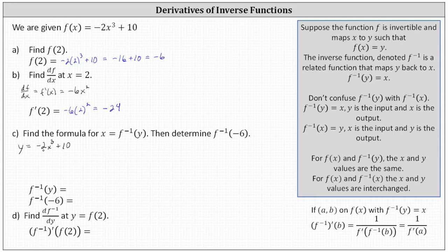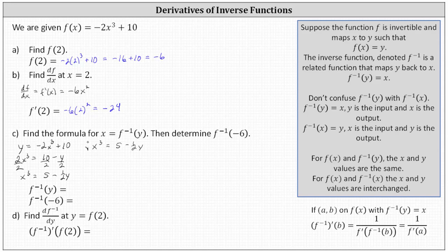We begin with y equals negative two x cubed plus 10, and now we need to solve for x. Let's add two x cubed to both sides and also subtract y from both sides, which gives us two x cubed equals 10 minus y. Next, let's divide both sides by two, dividing each term on the right by two. Simplifying, we have x cubed equals five minus one-half y. Now we need to cube root both sides to solve for x.